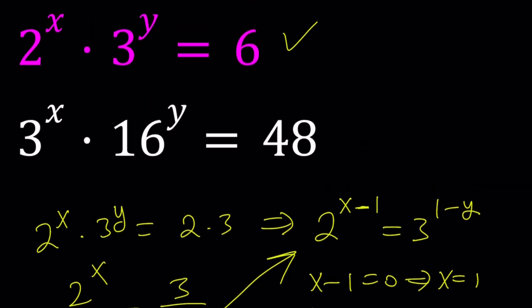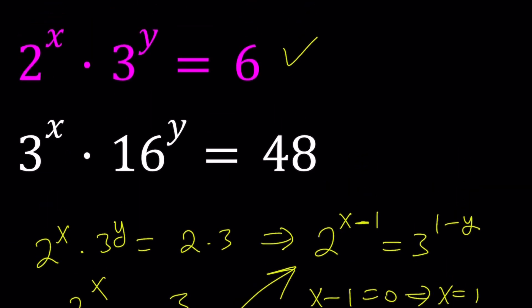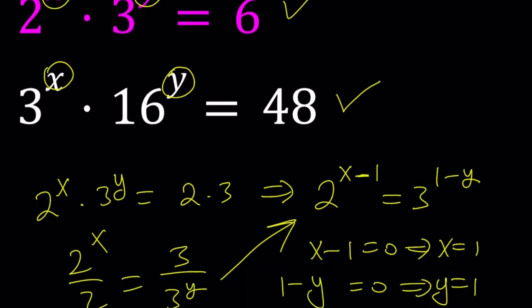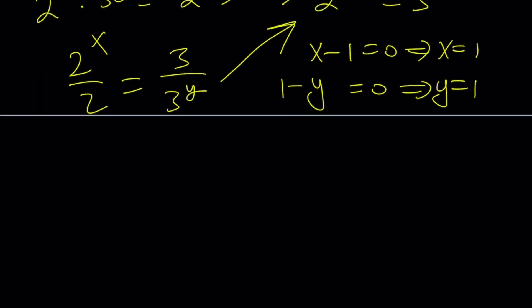Does that work in the second equation too, right? You can check it out and it does actually work because 3 times 16 is 48. That's what I meant, like as soon as you saw this problem, forget about the x and y, 2 times 3 is 6 and 3 times 16 is 48. I know that, okay? And you know that too, hopefully. That's great. Now let's go ahead and take a look at the second equation anyways.